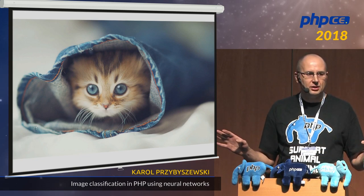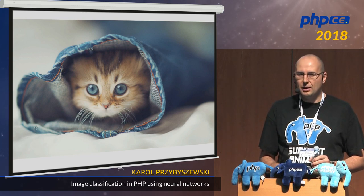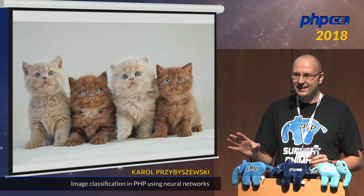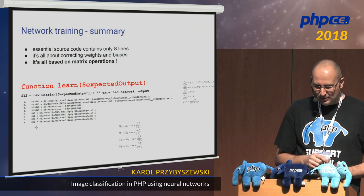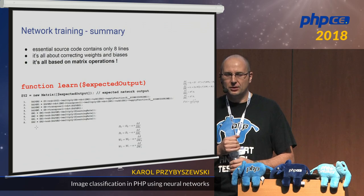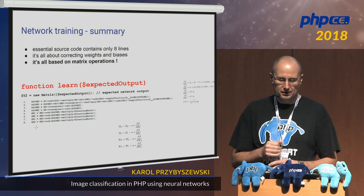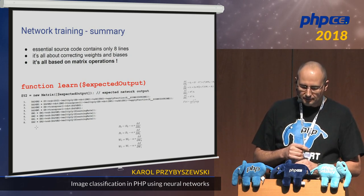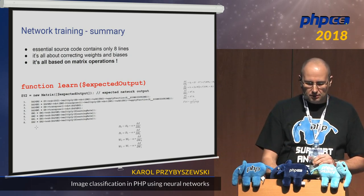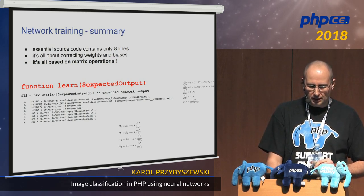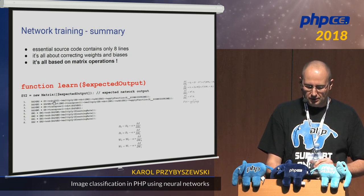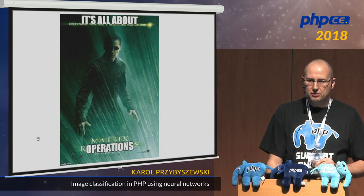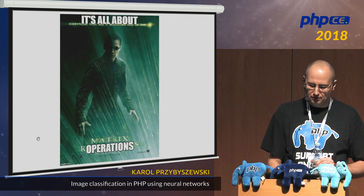You can open your eyes now — cute kittens for a moment of relaxation. To summarize network training: the essential source code is only eight lines of code — long lines, but still eight. Network training is all about correcting weights and biases, and it's all based on matrix operations. We wrap those lines of code into a single function called learn, which encapsulates all the derivative calculations. It's no revolution — it's matrix operations.